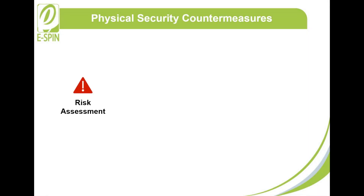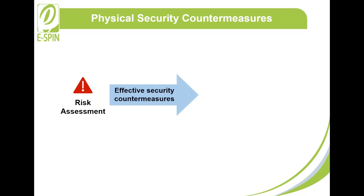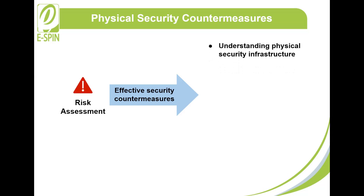Risk assessment also enables the establishment of effective security countermeasures. Understanding physical security infrastructure allows organizations to strengthen perimeter security through the installation of fencing, outdoor lighting, and surveillance systems.